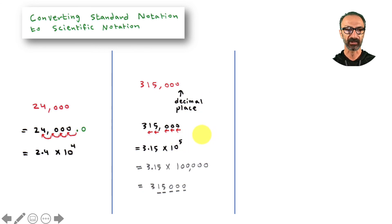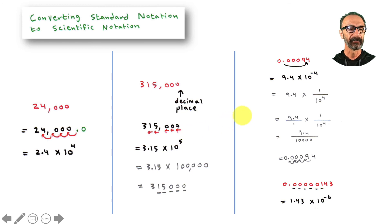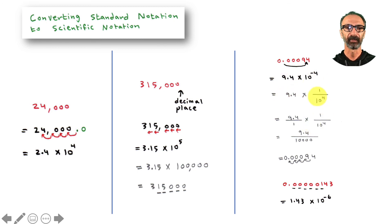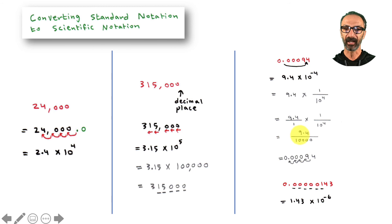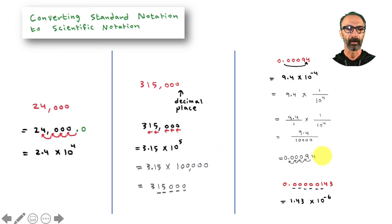One more example: a very tiny number — the decimal needs to move between 9 and 4, making it 9.4. But since the original number was very small, we use a negative exponent to balance it back. To support: 10 to the negative 4 means 1 over 10 to the fourth, which is 1 over 10,000. So 9.4 over 10,000 gets smaller — you move the decimal to the left. Quick example: move the decimal to the right and write a negative exponent for how many places you moved.